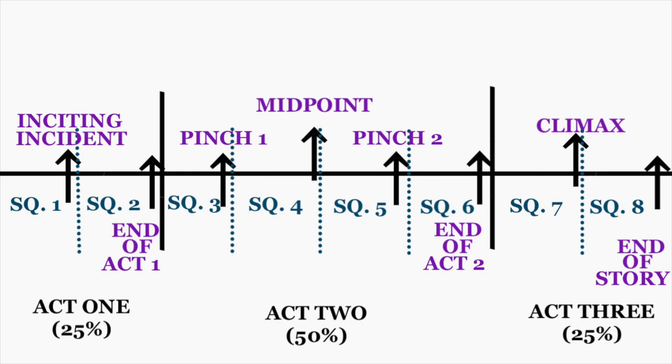Knowing this basic structure will allow us to attack the eight-sequence story structure more effectively. Each of the eight sequences has its own beginning, middle, and end. The end of each sequence will be a major plot point, and thus it can be considered the climax of that particular sequence. In the end, you're going to have eight climaxes — they just have different names, for example the midpoint. The biggest thing to keep in mind is that you want your scenes to follow a cause and effect model: an event followed by the aftermath, followed by another event, and so on.